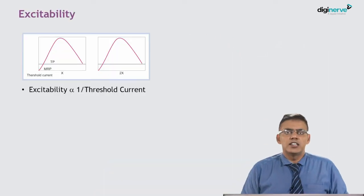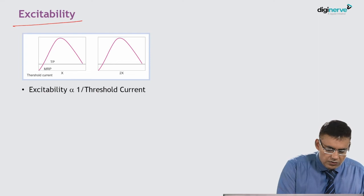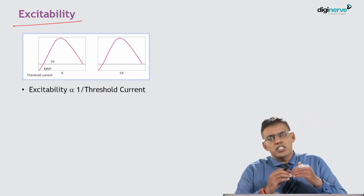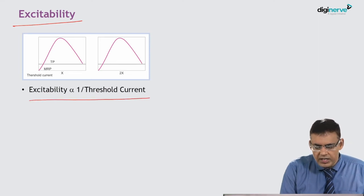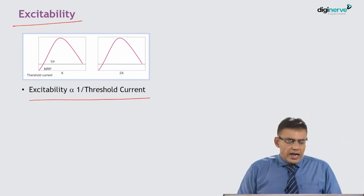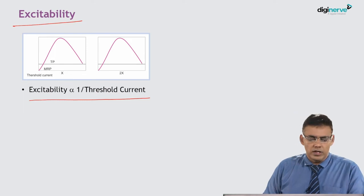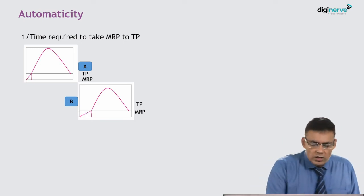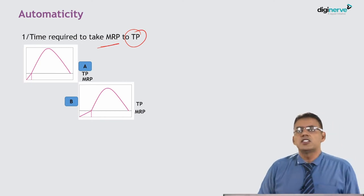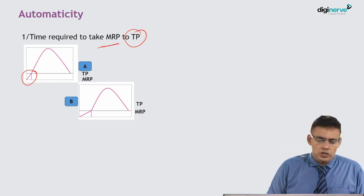Two important properties: Excitability is the property by which the membrane potential shifts from resting membrane potential to reach the threshold potential, generating a new action potential. Excitability is inversely proportional to threshold potential — higher threshold means lesser excitability, lower threshold means greater excitability. Automaticity is inversely proportional to the time taken to reach threshold potential from the resting membrane potential — the lesser the time, the greater the automaticity.